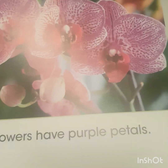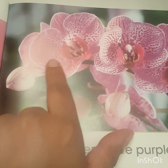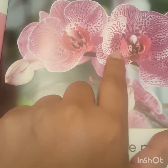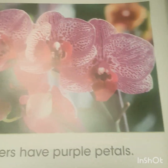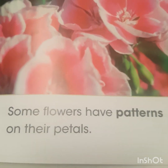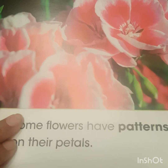Some flowers have purple petals. Wow, this is a beautiful orchid plant, one of my favorites. Look how beautiful that design on this orchid plant is. Some flowers have red petals, like this rose here in this photograph. Some flowers have patterns on their petals, just like our orchid plant had that pattern — it had purple stripes on it.